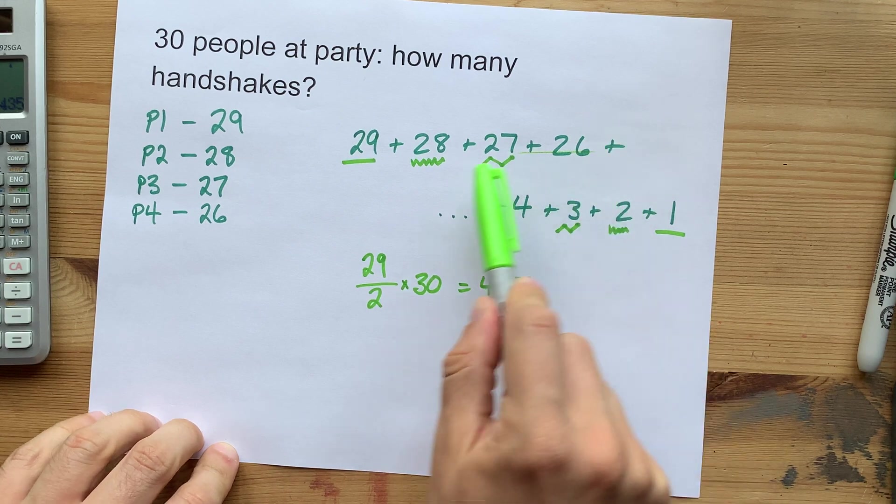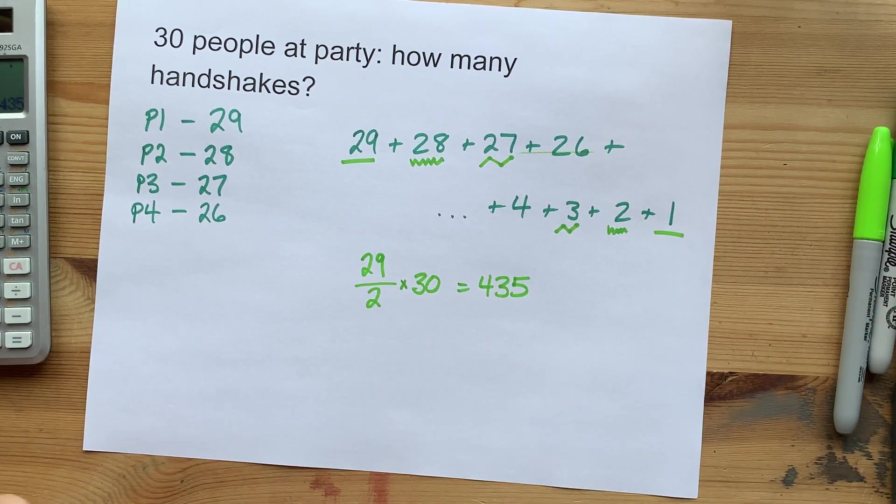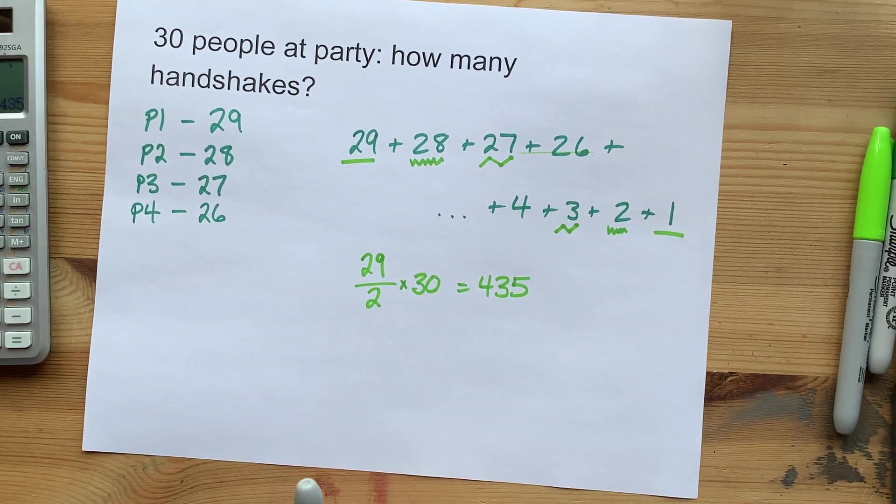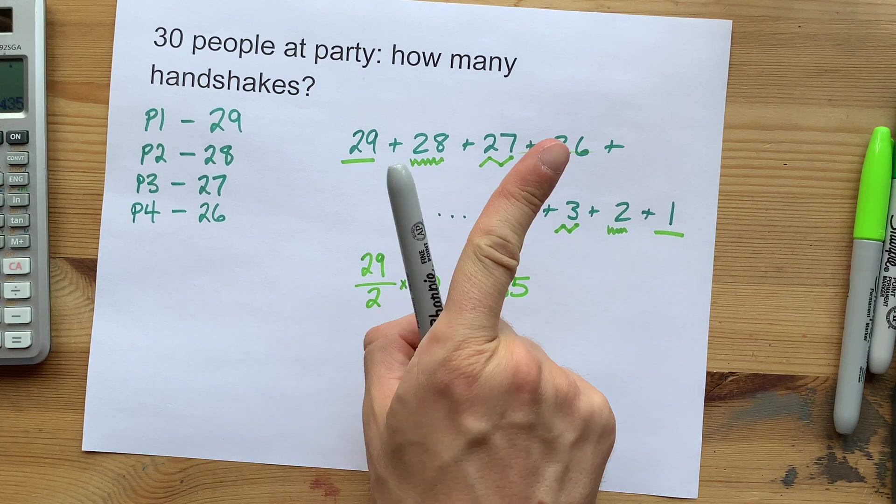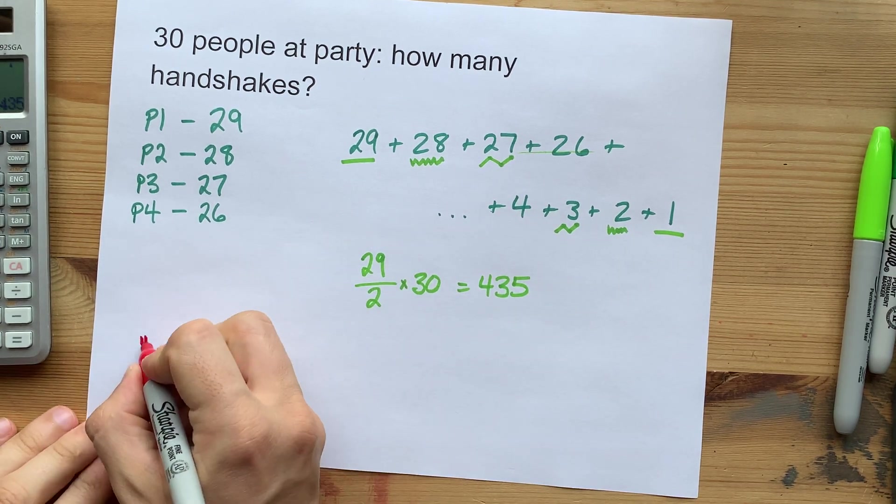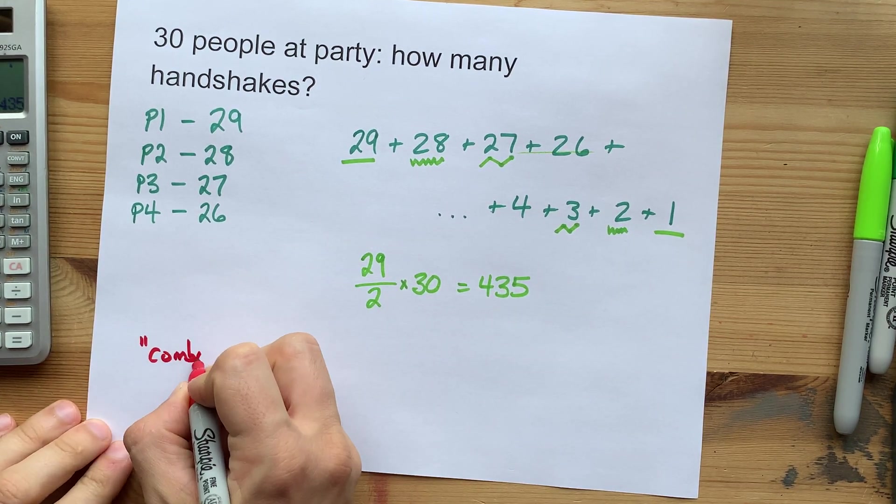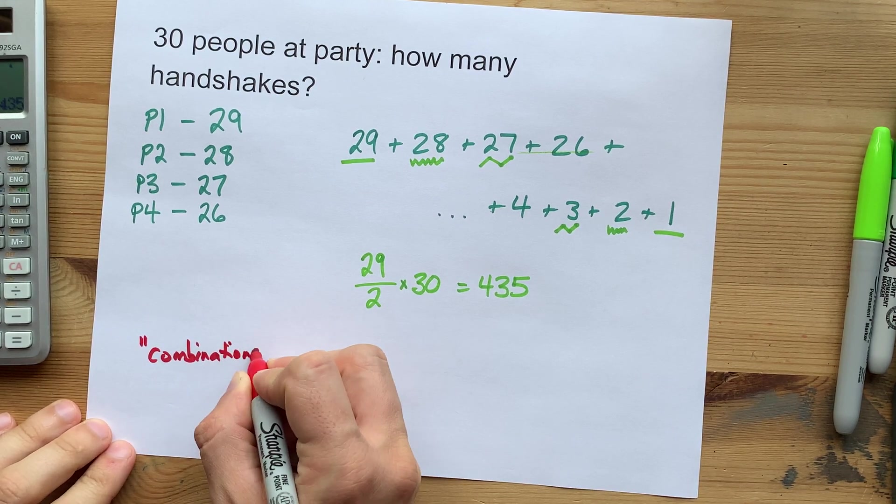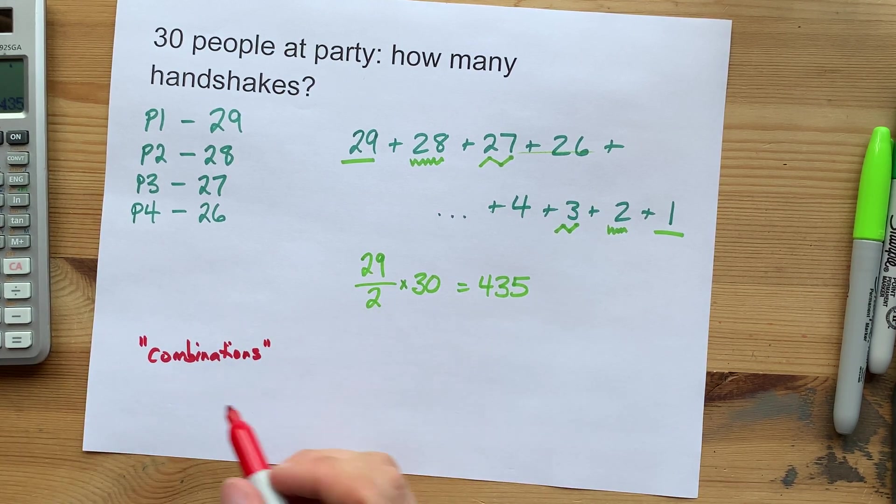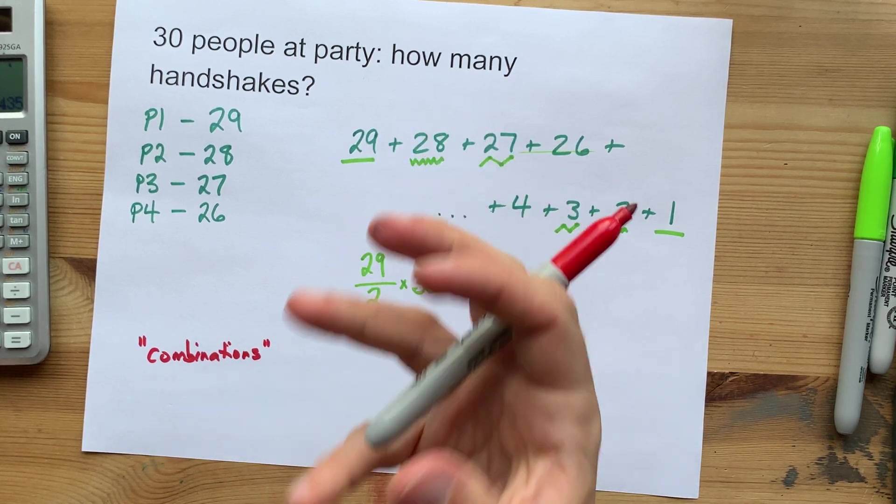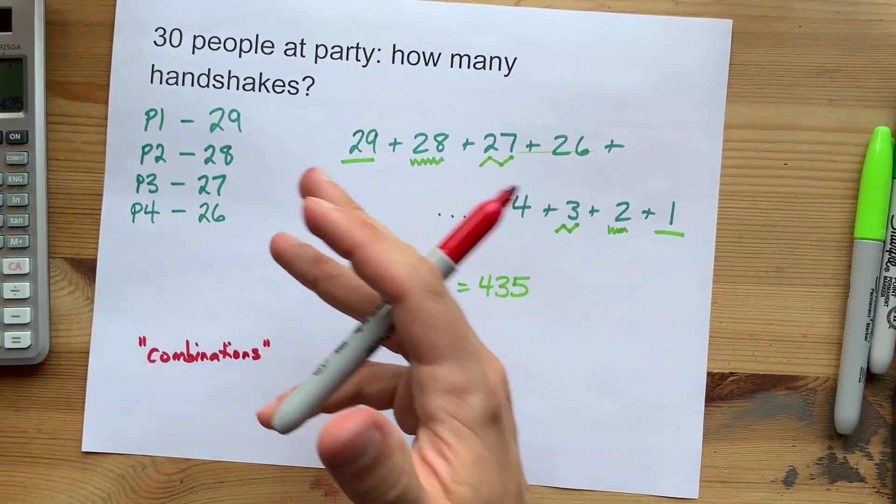Again, you could have done all of this adding on your calculator. Whatever. It's a free country. There actually is one other way to do it. It is called combinations. And combinations is a very specific math term, meaning arrangements or groups of things where the order doesn't matter.